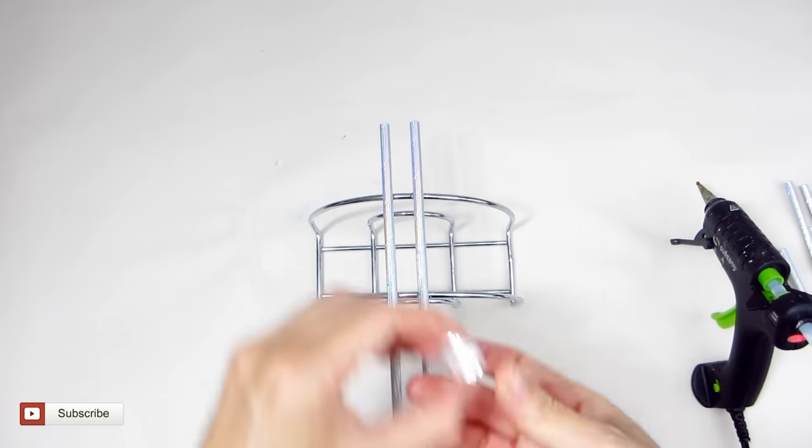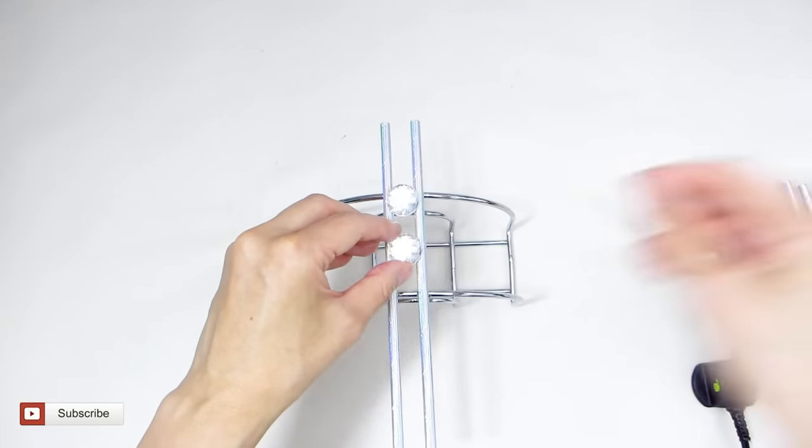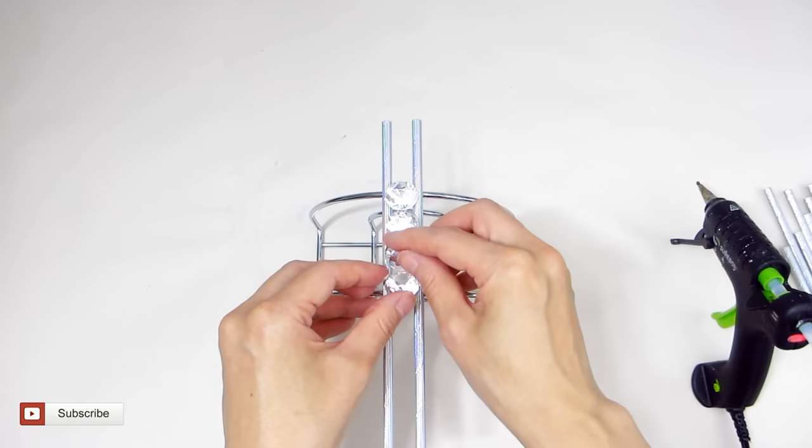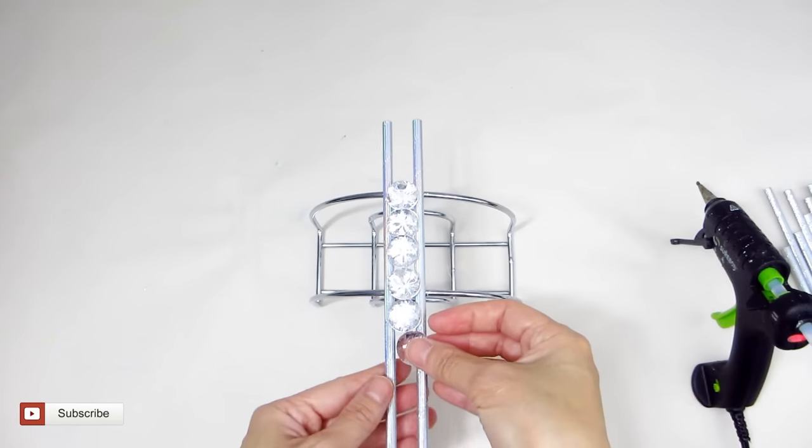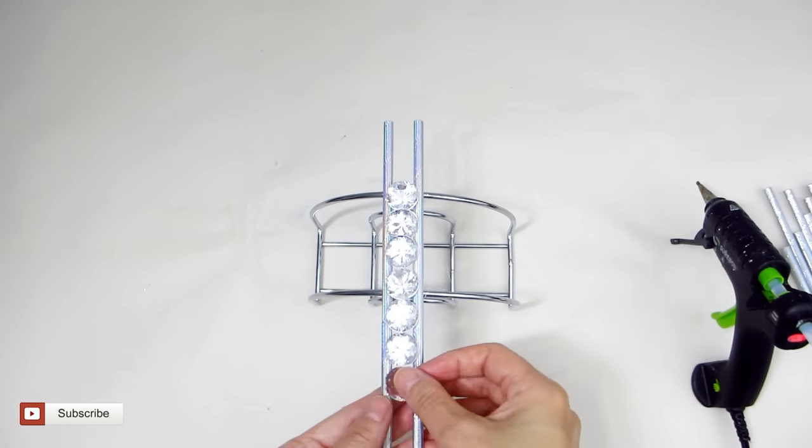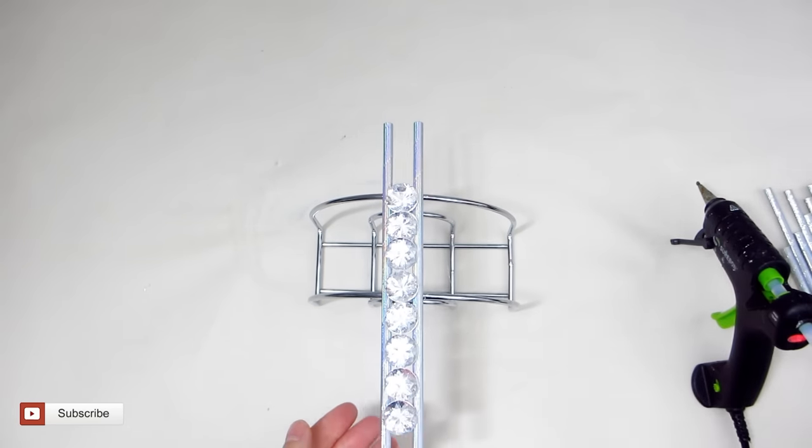Then adhere the diamond gems between the first two straws starting from the top and work your way all the way down the length of the straws. Based on the length of the straws you should be able to fit around 11 diamond gems between the straws.